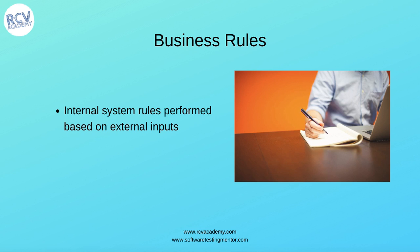For example, with credit decisioning, when you apply for a loan or credit card, there is a background process triggered when you submit your application with all your details and income. There are engines and rules that run automatically, and you are presented with the outcome — whether your application has been approved or declined. These background business rules based on input provided should be clearly defined in the acceptance criteria.